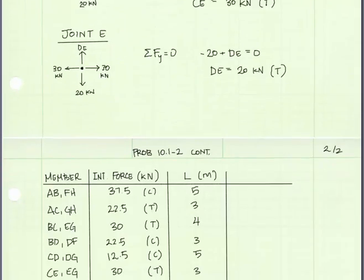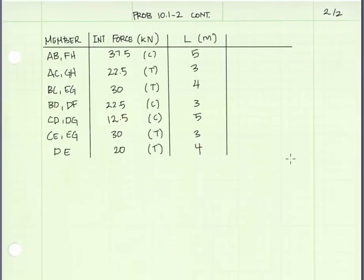So those are going to be our critical members from a buckling perspective. The problem asks us to find the required moment of inertia for this member, and we're going to use Euler's buckling equation.